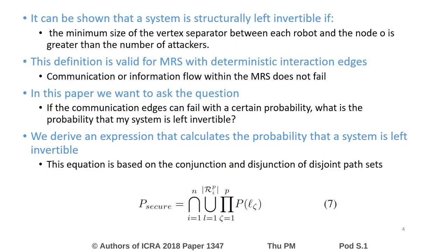It can be shown that a system is structurally left invertible, and thus secure, if the minimum size of the vertex separator between each robot and the node O is greater than the number of attackers attacking the system. This definition deterministically evaluates if the system is secure or not.